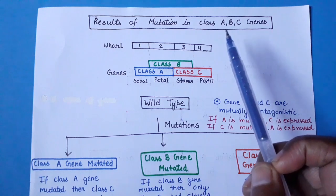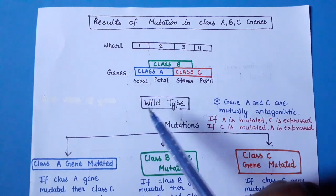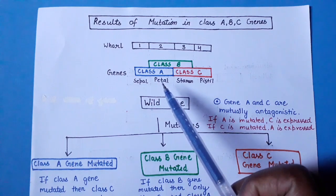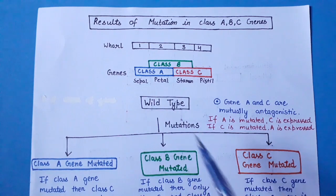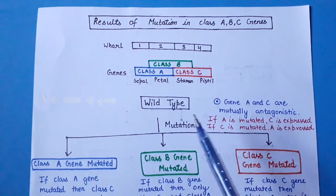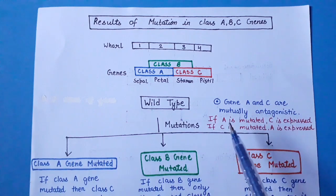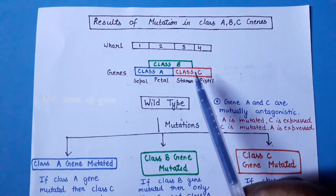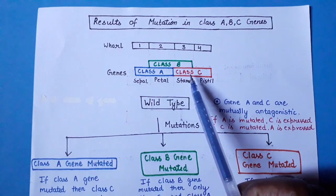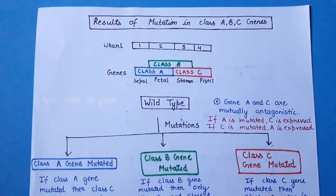Now we will discuss how mutation of Class A, B, or C genes impacts the appearance of a flower, comparing each mutant to the normal wild-type Arabidopsis flower. An important principle is that Class A and Class C genes are mutually antagonistic: if a Class A gene is mutated, Class C gene is expressed in its place, and vice versa.